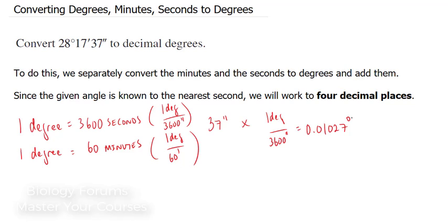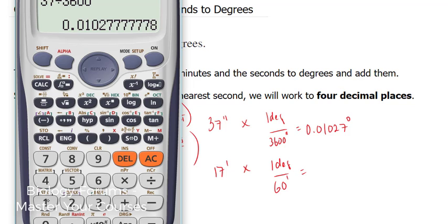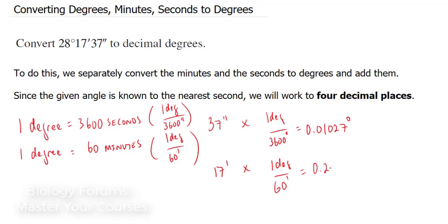Now, let's convert the minutes. 17 minutes times 1 degree over 60 minutes. If we multiply this out using our calculator once again, 17 times 1, which we're not going to do because we know it's going to be 17, divided by 60. And the answer to that is 0.2833 degrees.